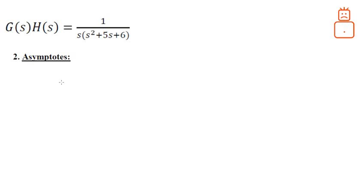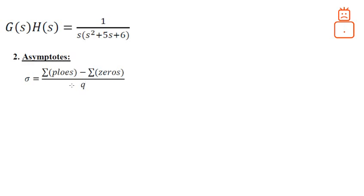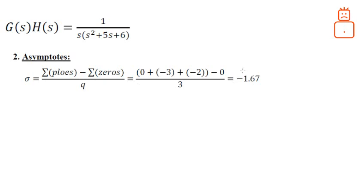Now let's go to the second step: the asymptotes. We need to know the location of the asymptotes as well as the angles that guide the branches to the zeros at infinity. The location is given by the algebraic sum of the poles minus the algebraic sum of the zeros, divided by the difference between the number of poles and zeros. Using our values, we get -1.67, which is the location of the asymptotes on the real axis.